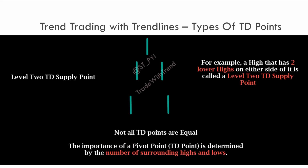The first step in this method is to determine a valid TD point. There are various levels of TD points — level one, level two, level three, and so on. Here we have a level two TD supply point. What it means is: take this bar into consideration. There are two bars before this bar which have distinct lower highs, and same goes on the right side. When you identify a relevant TD point, the balance has to be maintained on both sides. If you get two relevant lower highs on the left, you need at least two lower highs on the right for this to qualify as a level two TD point.